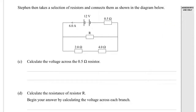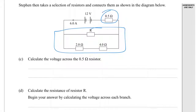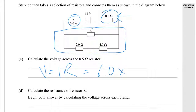Stephen then takes a selection of resistors and connects them as shown in the diagram below. Calculate the voltage across the 0.5 ohm resistor. This one is in series with the parallel branch, and then there's another series branch with the 2 ohm and 4 ohm. Since 6 amps is running through that resistor, it's just V equals I times R: 6.0 amps times 0.5 ohms equals 3 volts — to one significant figure.